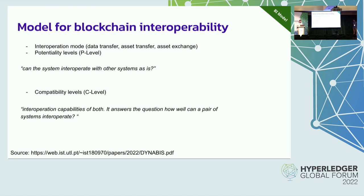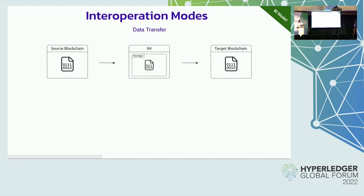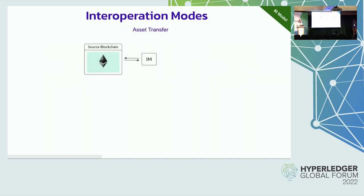Data transfer is very simple: typically we have a piece of data on a source blockchain, an interoperability mechanism in the middle, and we copy that data to the target blockchain via the interoperability mechanism. We typically also provide some proofs of validity, but not necessarily.